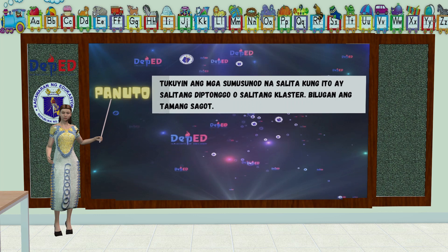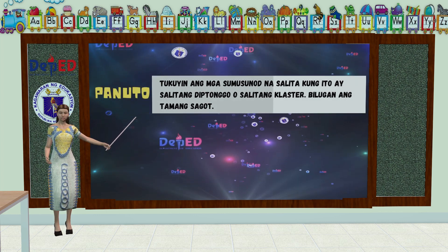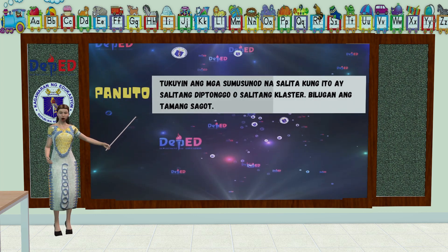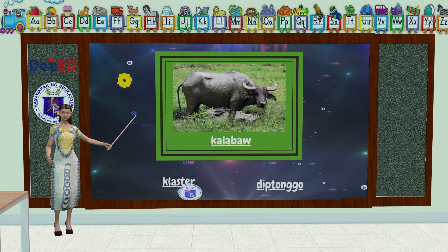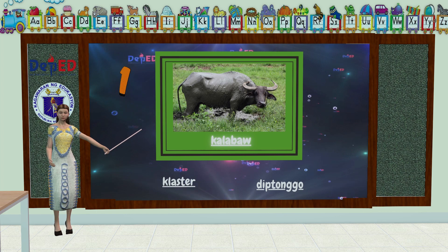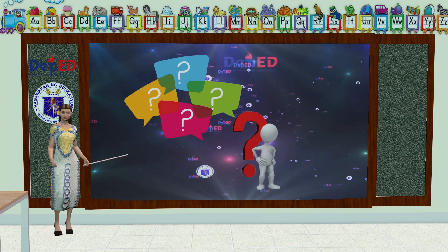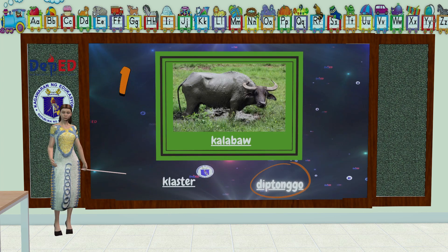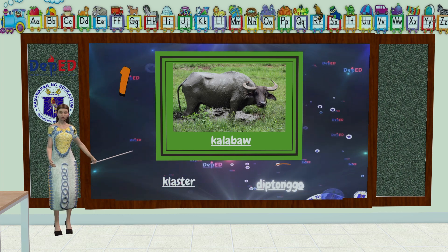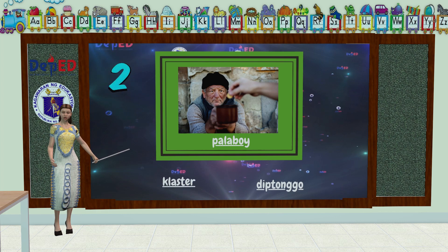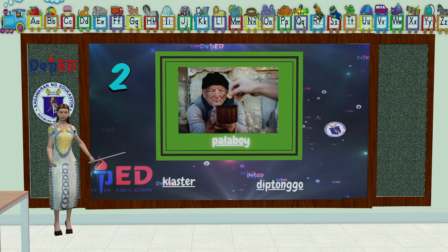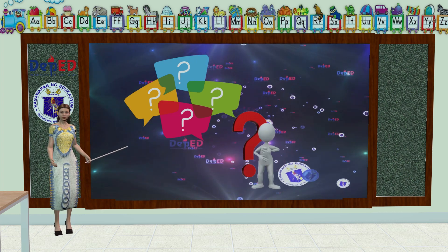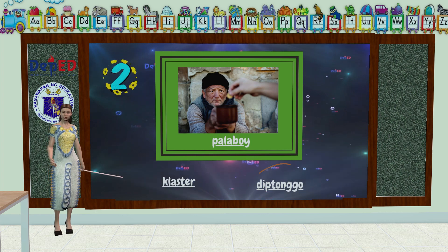Panuto: Tukuyin natin ang mga sumusunod na salita kung ito ay salitang diptonggo o salitang cluster. Bilogan natin ang tamang sagot. Una, ang salitang kalabaw. Ang salitang ito ay diptonggo. Tingnan naman natin ang pangalawang salita: Palaboy. Ang tamang sagot naman dito ay diptonggo.